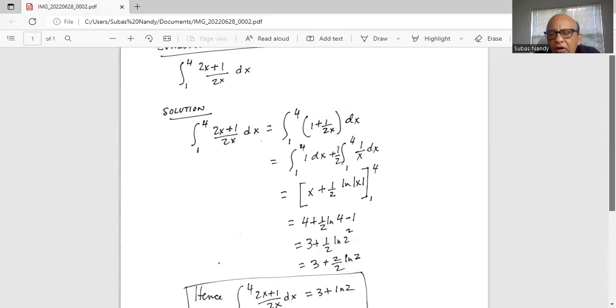Plugging in or substituting the value of 4 for x, we get 4 plus half of ln 4 minus, when we substitute 1, 1 plus half ln 1.